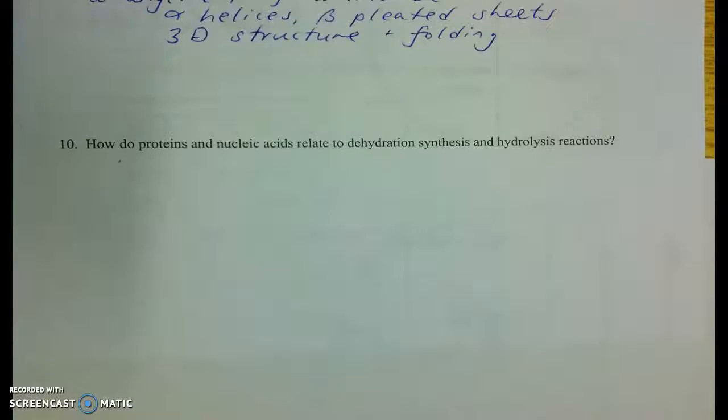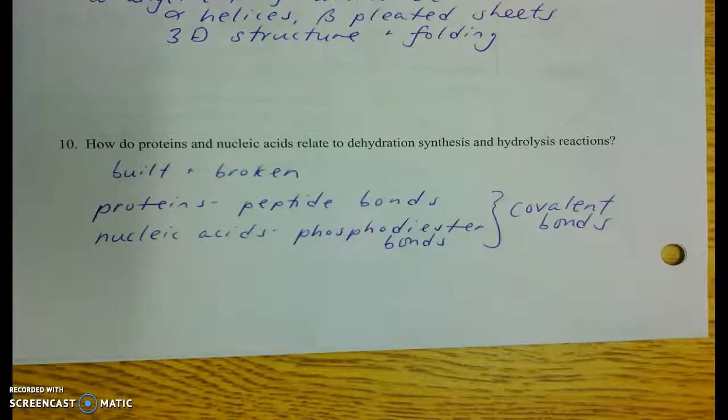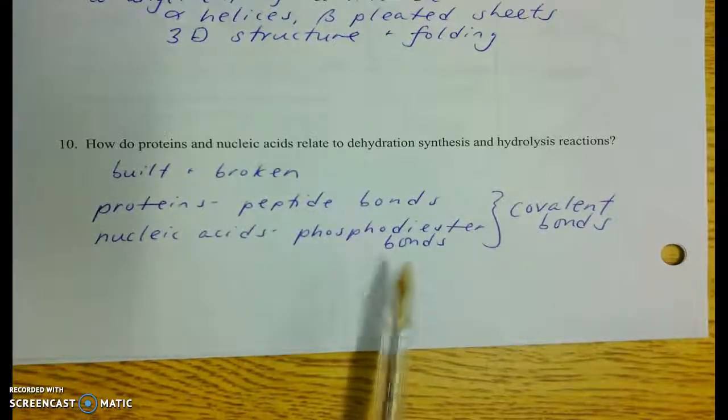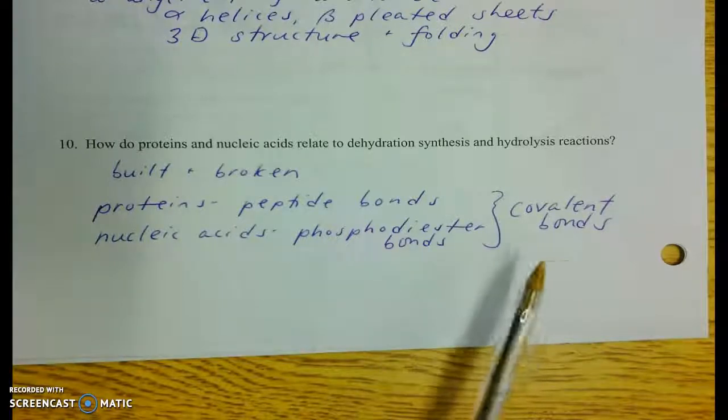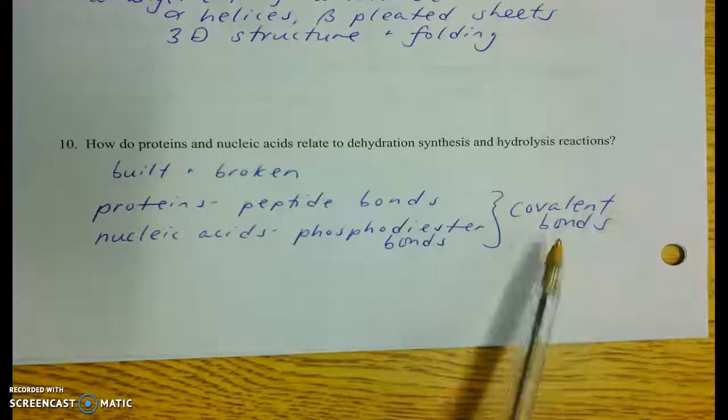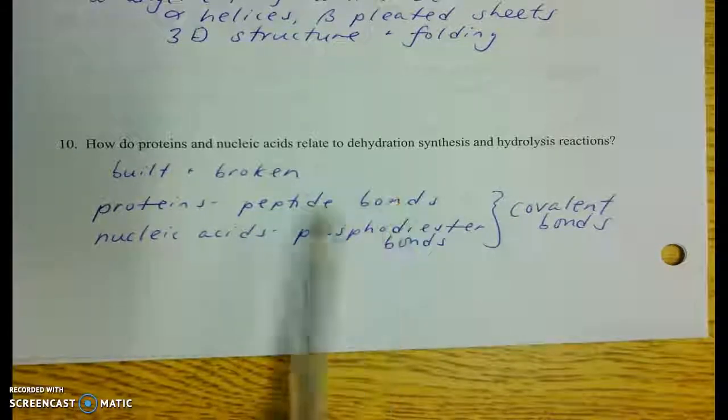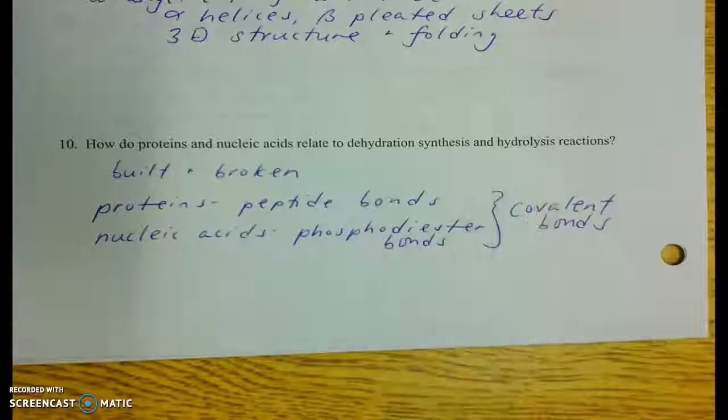Finally, these key terms that will not go away. Dehydration synthesis and hydrolysis. How do they relate to proteins and nucleic acids? Well, again, they're still just describing how these organic molecules are built and broken. Remember that proteins have peptide bonds that are formed as a result of dehydration synthesis reactions, while nucleic acids have phosphodiester bonds. Just fancy words for the covalent sharing of carrying bonds that result from dehydration synthesis reactions. These are also the bonds that are broken through hydrolysis reactions.